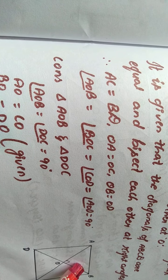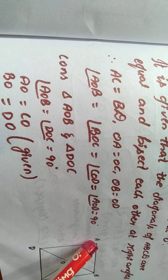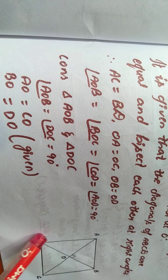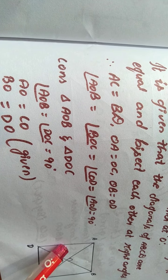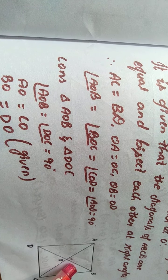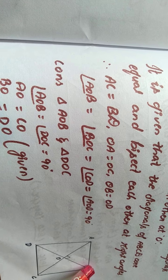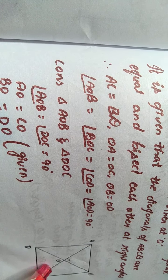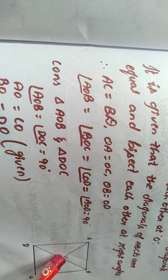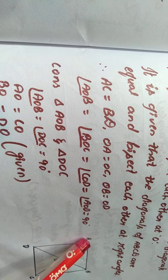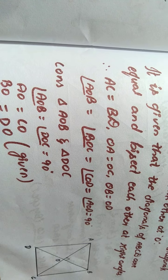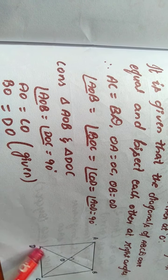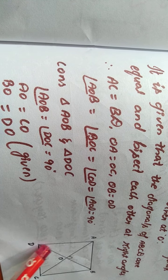The angle AOB equals DOC as vertical opposite angles, both being 90 degrees. Hence these two triangles are congruent by SAS congruency, and by CPCT I can say AB equals DC. Similarly, I can prove AD equals BC by taking triangles AOD and BOC. Next, by taking triangles AOB and ABC, with two equal sides and one common side, by CPCT AB equals BC. I have now proved all sides are equal: AB equals BC equals CD equals DA.